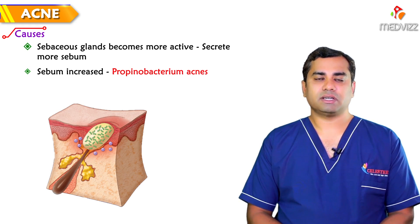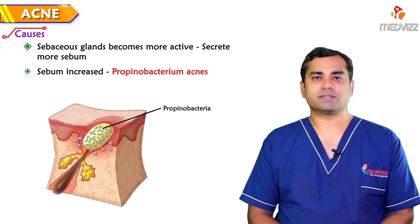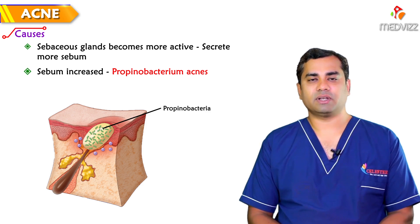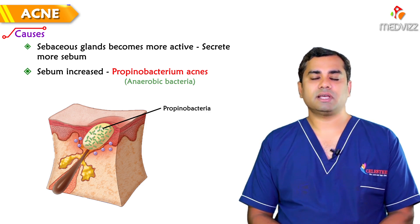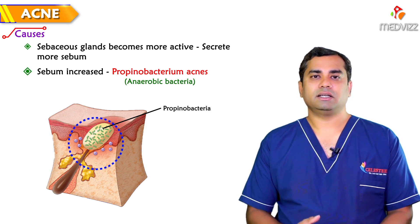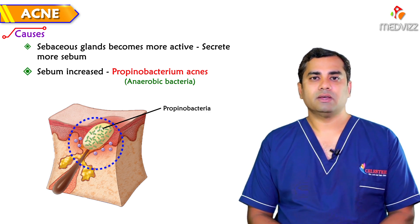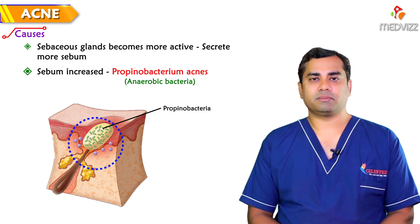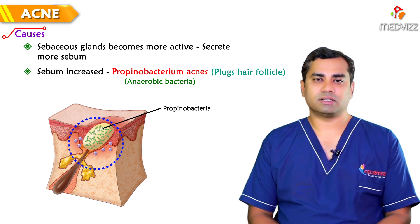Once the sebum is increased, a bacteria called Propionibacterium acnes — which is the causative factor for acne vulgaris — comes into play. This is an anaerobic bacteria which occludes the hair follicle and increases its population because of the increasing sebum, thereby plugging the hair follicles.